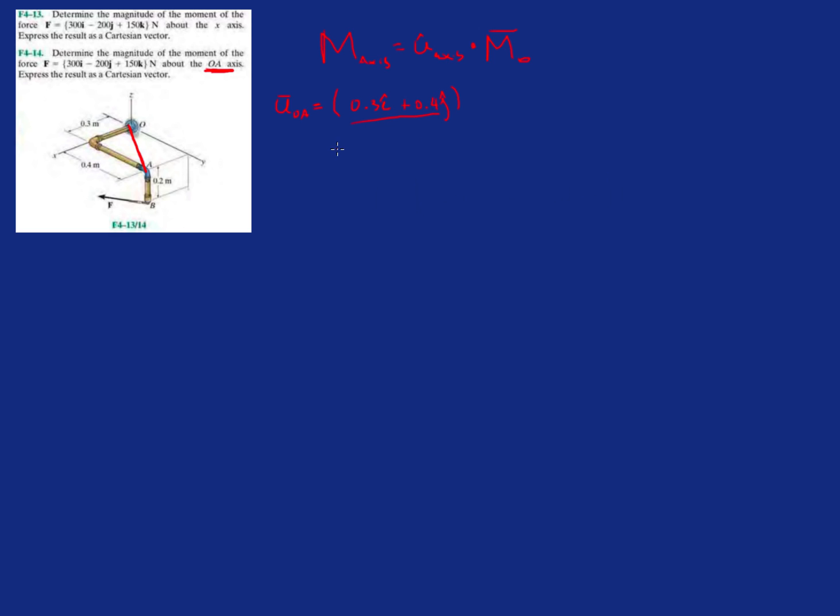And then we divide all this by the magnitude of this distance, which is going to be 0.3 squared plus 0.4 squared. So now we should get 0.3i plus 0.4 divided by 0.5i plus 0.4 divided by 0.5j. That's the unit vector of line OA.